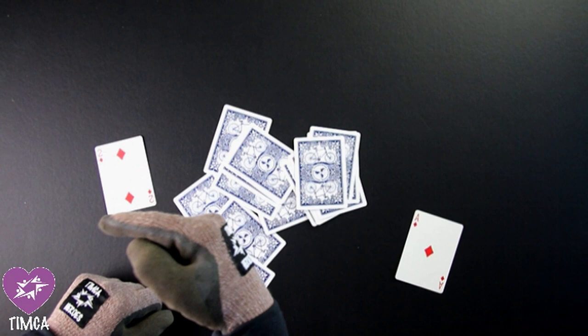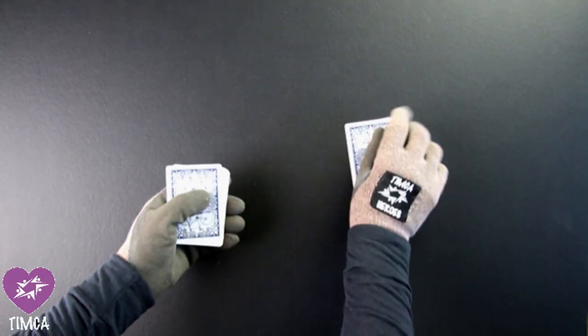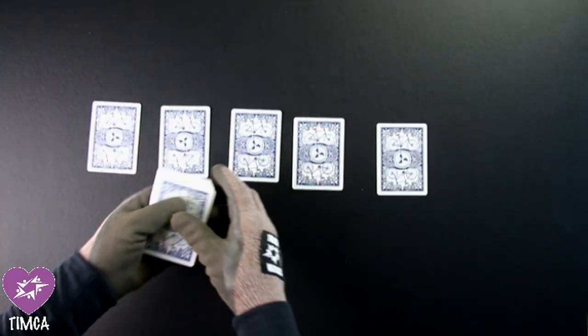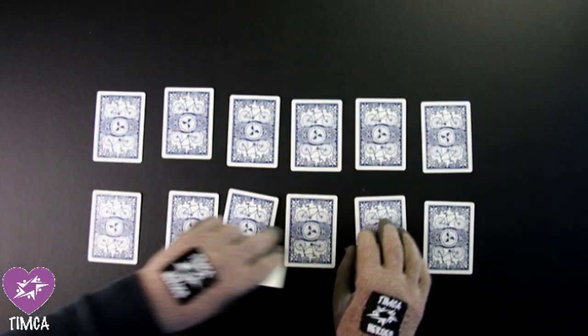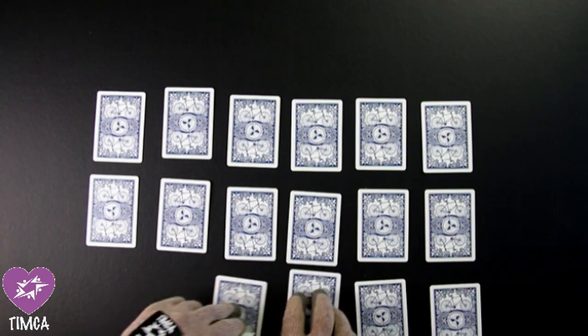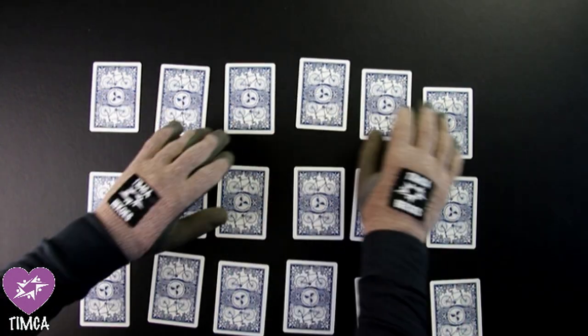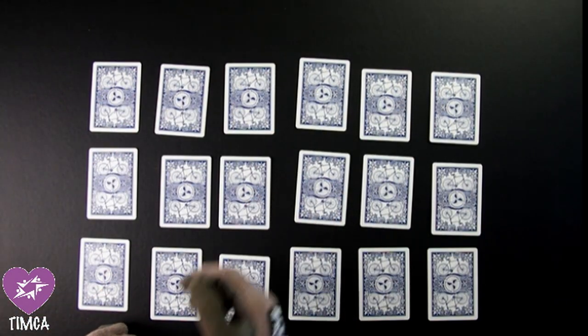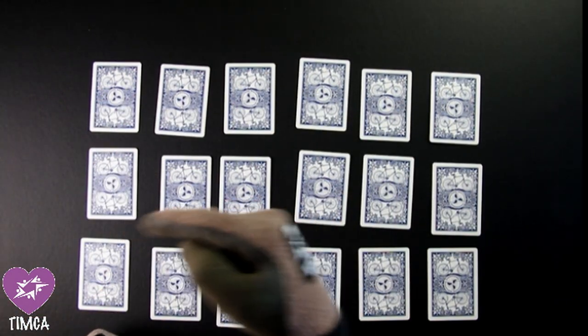Learner 1 now shuffles the cards and lays them out into a grid of 6 by 3. Let's go. Learner 1 will play first.